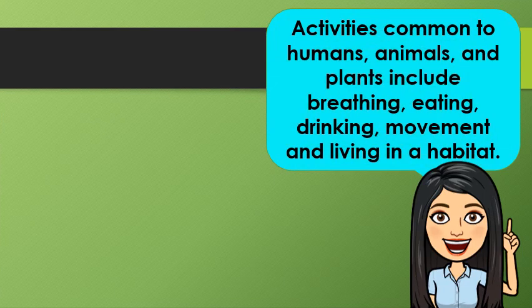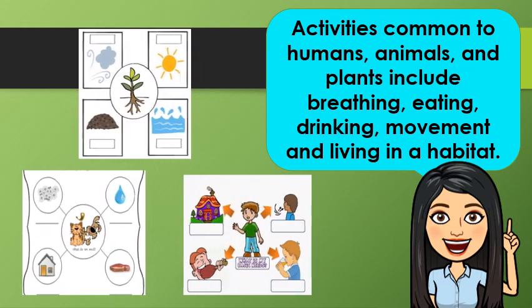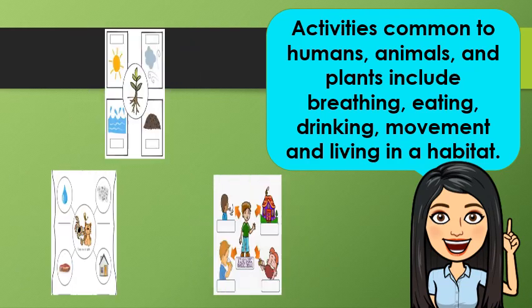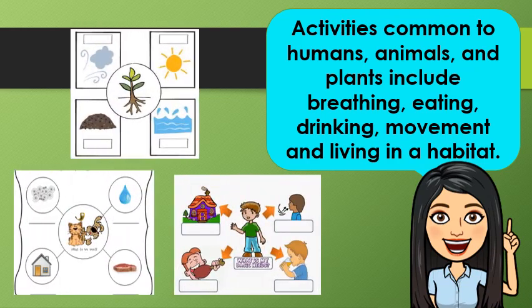Activities common to humans, animals, and plants include breathing, eating, drinking, movement, and living in a habitat — a place where living things live.